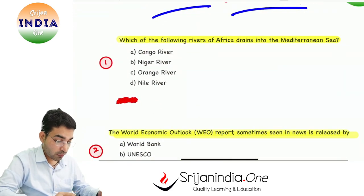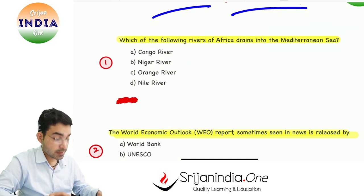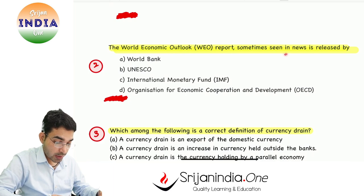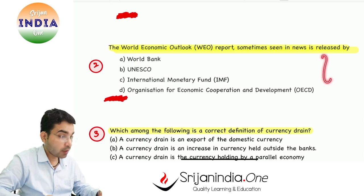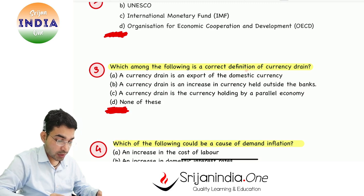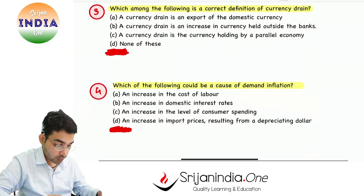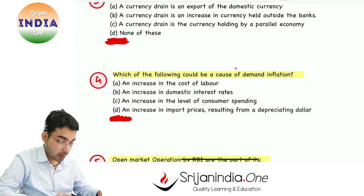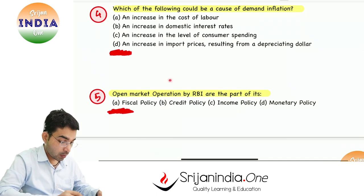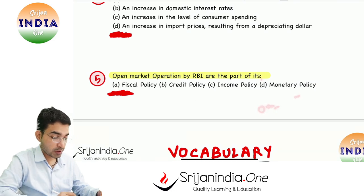Today's question: which of the following rivers of Africa drains into the Mediterranean Sea? The World Economic Outlook report — sometimes seen in news — is released by which institution? Which among the following is a correct definition of currency drain? What could be a cause of demand inflation? And open market operations by RBI are part of which policy framework? These are the five questions for today.